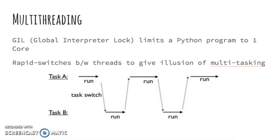Computers with multi-core CPUs can actually run multiple instructions simultaneously, but in Python there's a feature called the GIL, or Global Interpreter Lock, that limits a threaded Python program to run on only one core, allowing only one thread or task to be executed at a time. Therefore, in order to give the illusion of multitasking, multi-threaded Python programs must rapidly switch between threads.